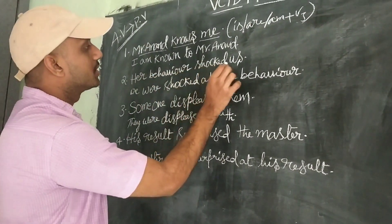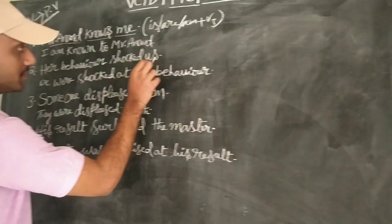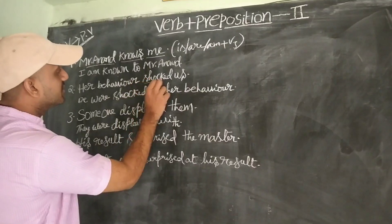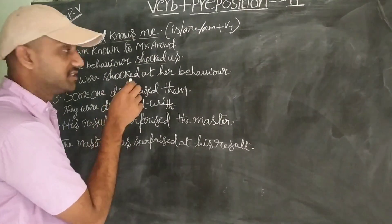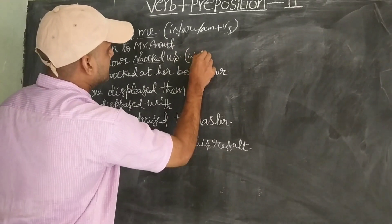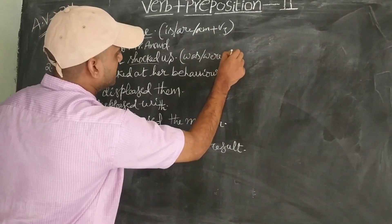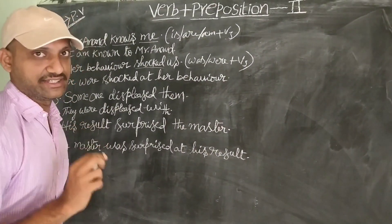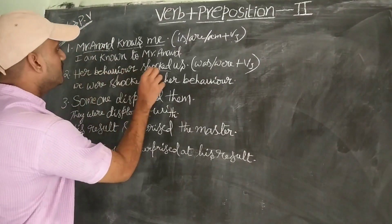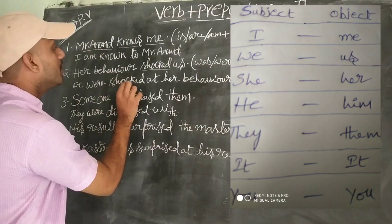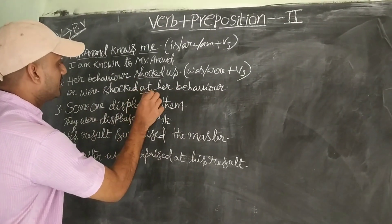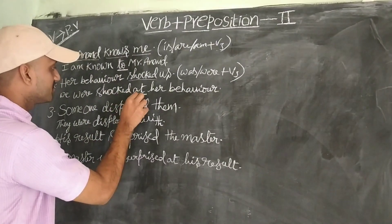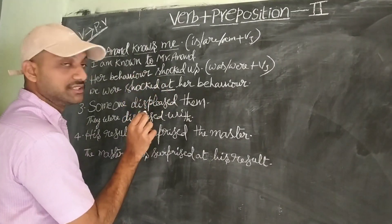Her behavior — this is in simple past, which comes under V2. The rule is: was/were plus V3. In passive form, her behavior was known. 'Known to' is the preposition used. Like that, some prepositions should be added after the verb in model 2. Observe the description for clarity.